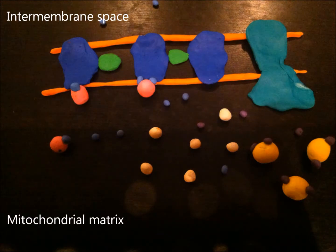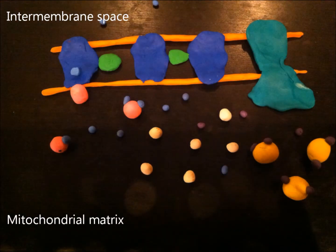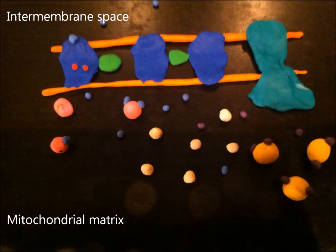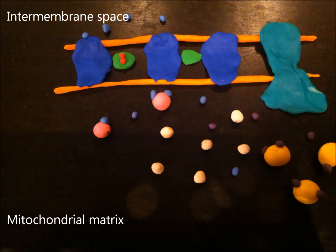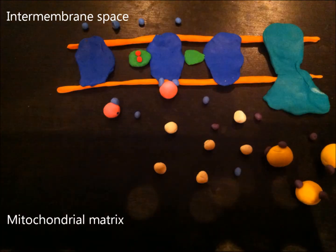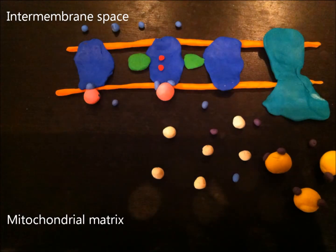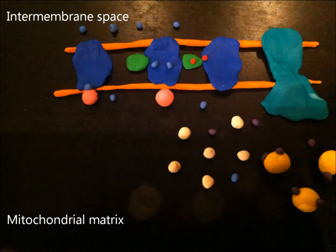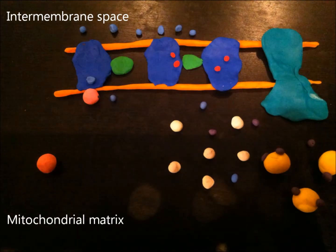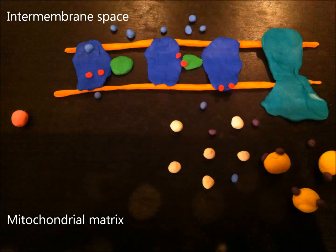NADH is oxidized by donating a hydrogen proton and two electrons to the protein carrier. The hydrogen proton is sent into the inner membrane space where it will create a proton concentration gradient. The electrons will be transported through the electron transport chain. FADH2 will also be oxidized by donating two protons and two electrons which will also be passed along.